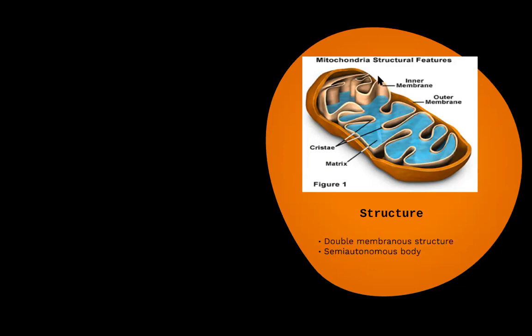Since the inner membrane has a larger area, more ATP can be produced — that is the complete importance of the folded inner membrane. On this inner membrane, the chemical process of ATP production happens, and this process is called oxidative phosphorylation. Mitochondria are also double-membranous and are termed a semi-autonomous body because they have their own DNA and their own ribosomes, meaning they can produce their own protein.